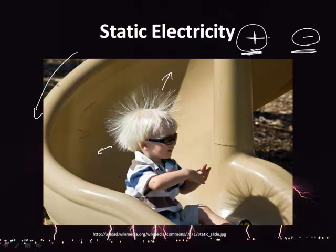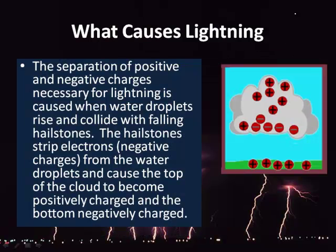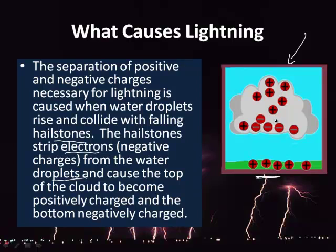That discharge is essentially lightning. What causes lightning? It's about the separation of positive and negative charges. Lightning is caused when water droplets rise and collide with falling hailstones — even if those hailstones melt before reaching the ground. The hailstones strip electrons, which are negatively charged, from the water droplets, causing the top of the cloud to become positively charged and the bottom negatively charged. The ground also becomes positively charged.